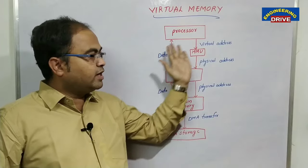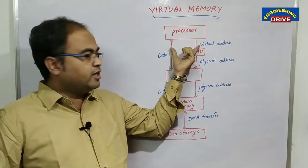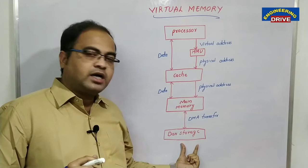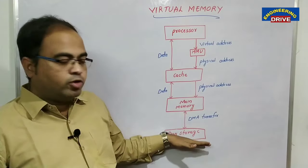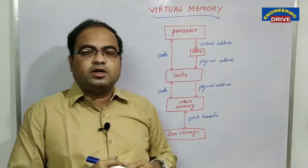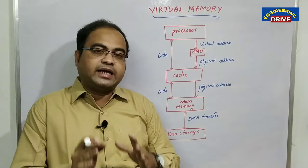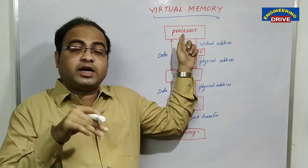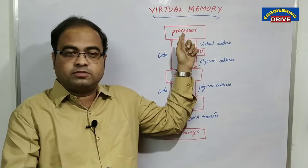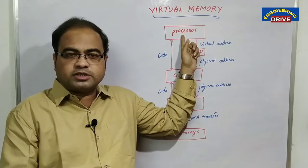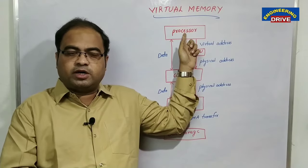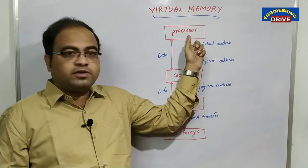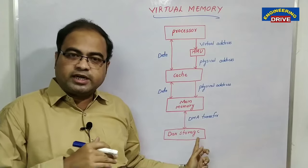Everybody is aware of this diagram. The processor will be there first, then in between cache memory, which is a small amount of fast memory used in the computer. Then comes main memory, and the last is our secondary memory. Where does the execution of programs take place? The execution of programs will take place in the processor. Where are the programs that users will use stored? We will install programs, games, and apps in our computer. They are stored in secondary memory. Execution takes place in the processor; programs are stored in secondary memory — that is, in disk storage.